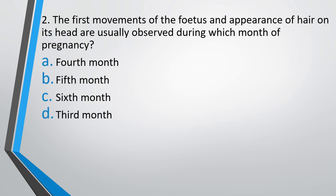Question number 2: The first movement of the fetus and appearance of hair on its head are usually observed during which month of pregnancy? Fourth, fifth, sixth, or third? The correct answer is Option B — the fifth month.